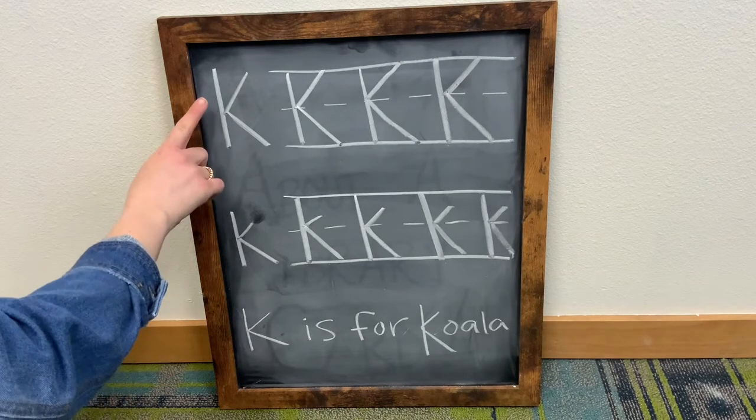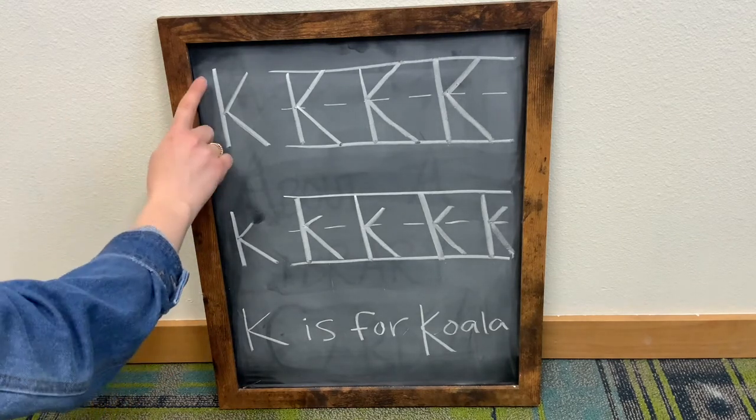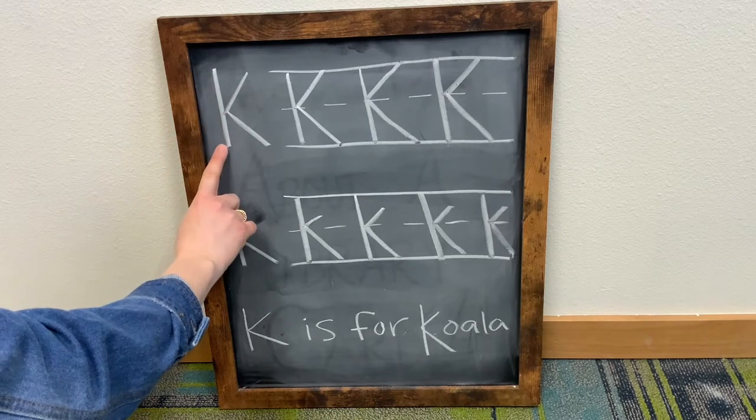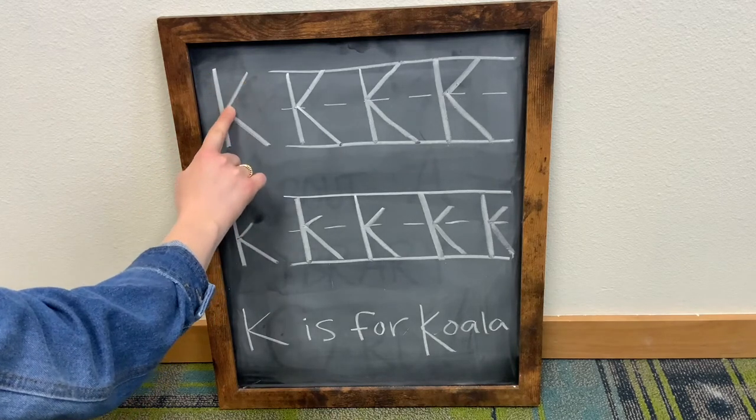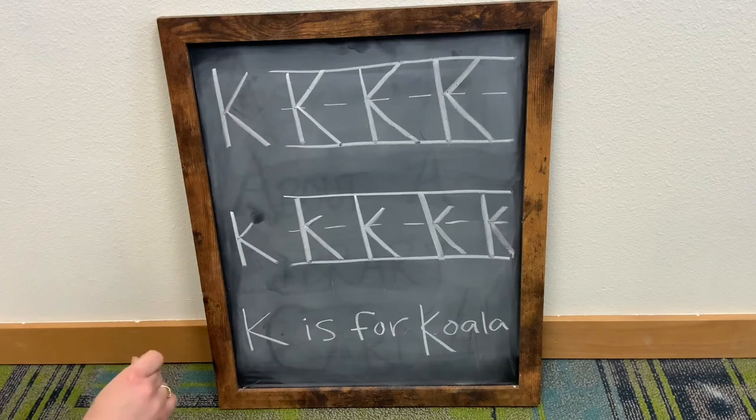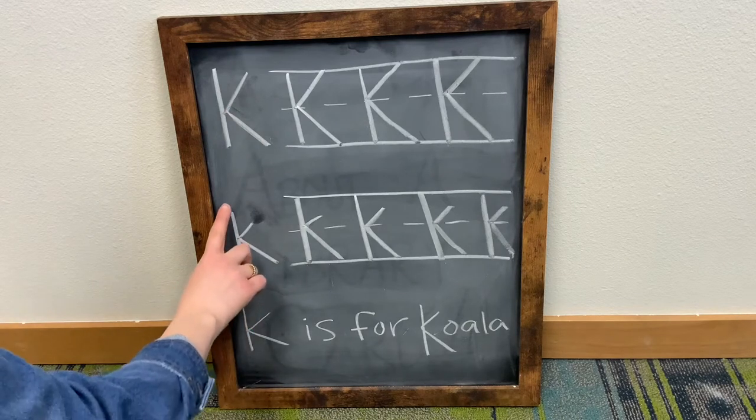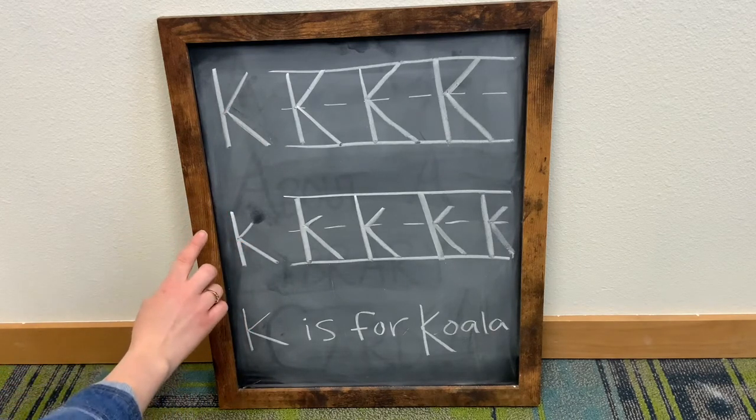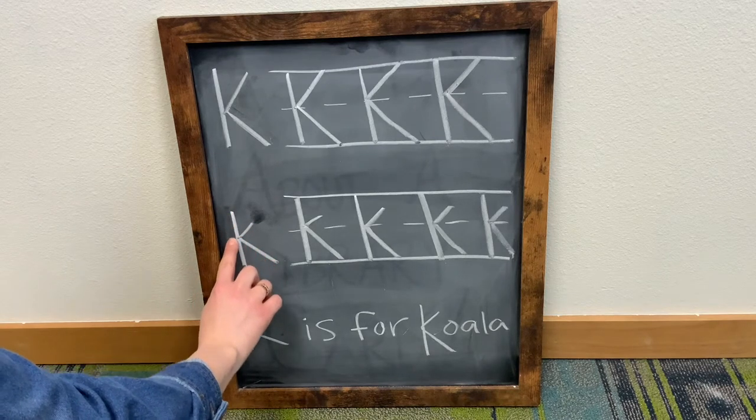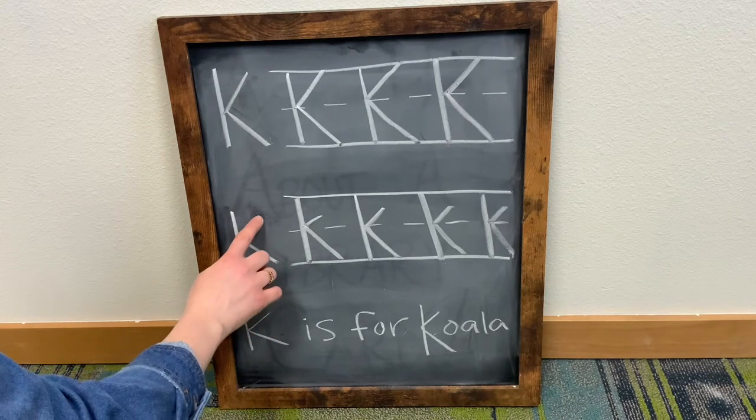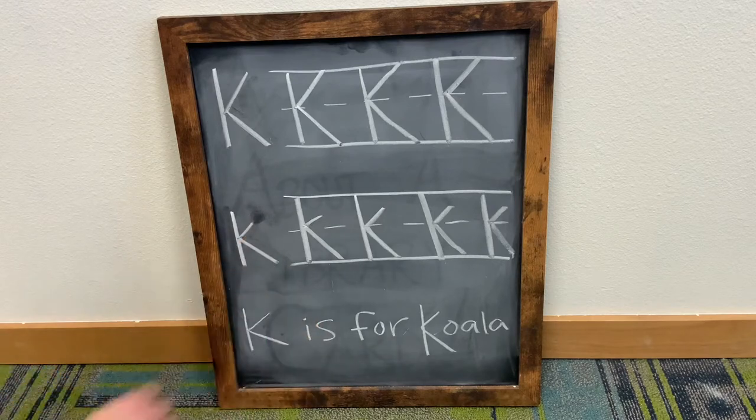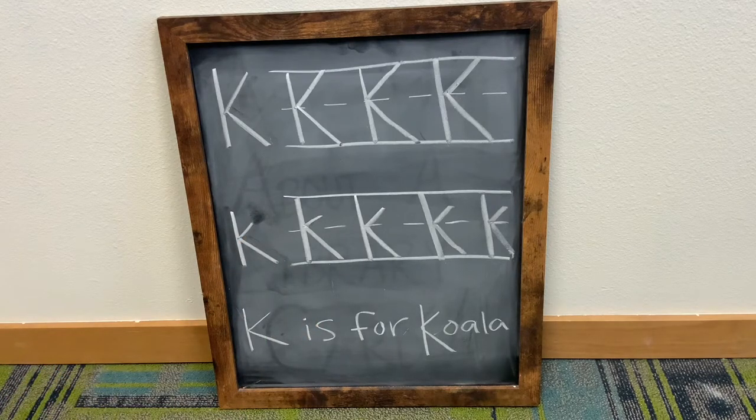To review, for an uppercase letter K, one, two, three. For a lowercase letter K, almost the same thing, just a little bit shorter. One, two, three. And there you have it.